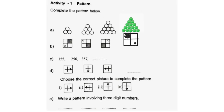A. In the 4th pattern there will be 5 circles below. B. The circle will be in the bottom column and the shaded part will be in the upper column. See that you draw the patterns neatly.